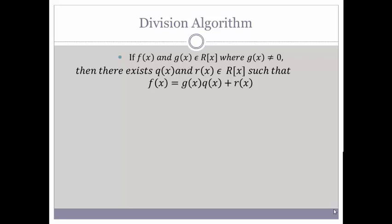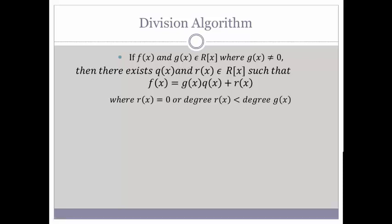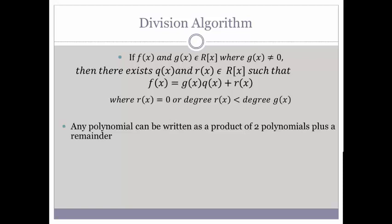So we have F of X equaling G of X times Q of X plus R of X — G of X is multiplied by Q of X, plus our polynomial R of X. The condition is that R of X must either equal zero or have degree less than the degree of G of X. In common terms, the division algorithm states that any polynomial can be written as a product of two polynomials plus a remainder.